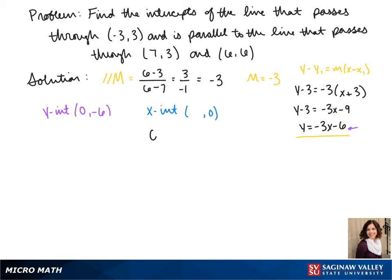To find our x-intercept, we plug in a 0 for our y. So that gives us 0 equals negative 3x minus 6. We add our 3x to the other side and divide both sides by 3. So our x-intercept is negative 2.